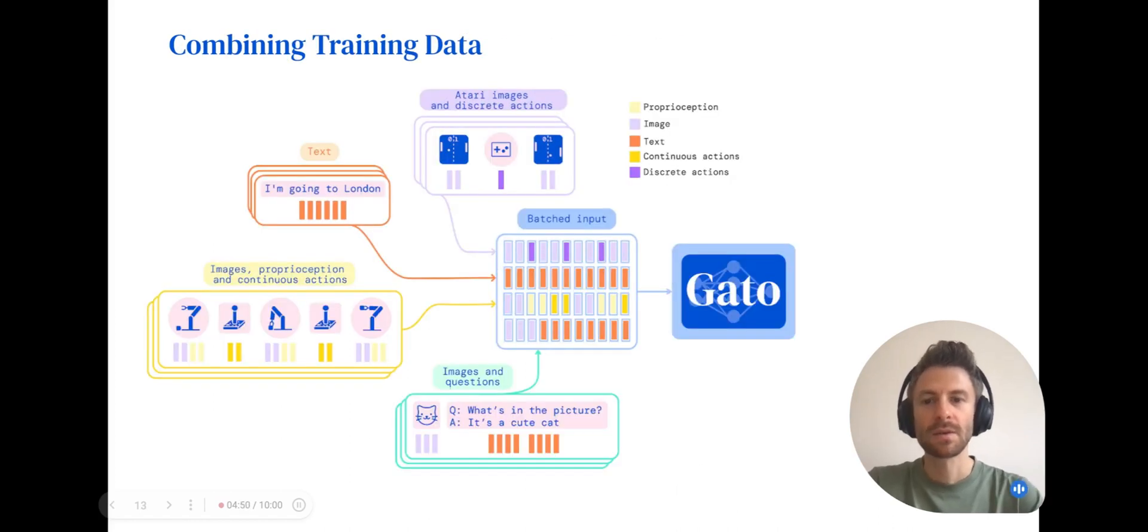During training, we use mini-batches that mix data from different multimodal data sources. We found it important to carefully tune the sampling weights for the training datasets. Data from each source is serialized, as described previously, before being concatenated together to form a mini-batch.